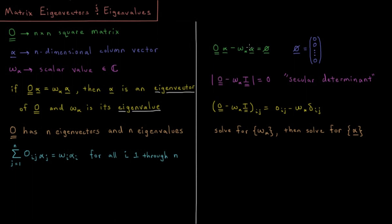If we take the determinant of this equation, the determinant of matrix O minus the eigenvalue omega times an identity matrix I, which is just the same matrix O but along the diagonal we're subtracting omega, the determinant of this is equal to zero whenever omega is an eigenvalue of O.